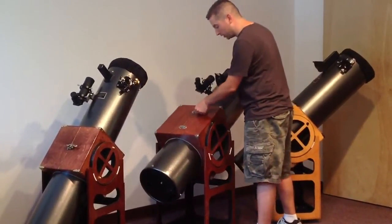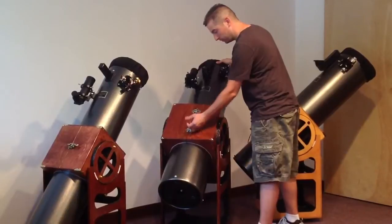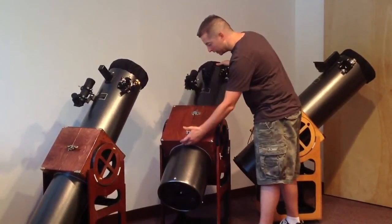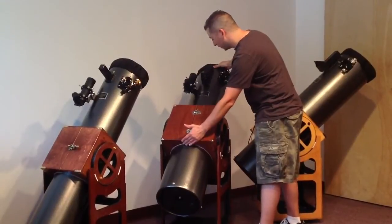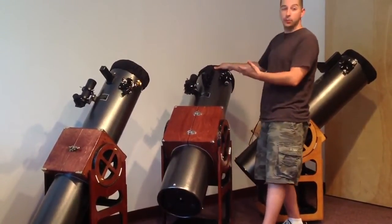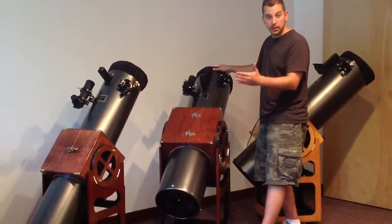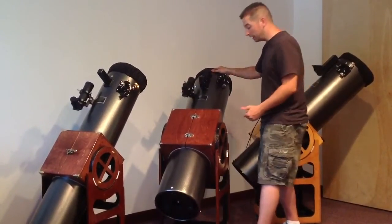What this allows is for the tube to be slid back and forth and rotated. For example, we could unlatch these two latches here, and with a little bit of pressure, one hand in the back, one hand on the front, we could slide the tube back. We would do that if we were using a heavy eyepiece and needed to counterweight the telescope so that it balanced with the large eyepiece in there.